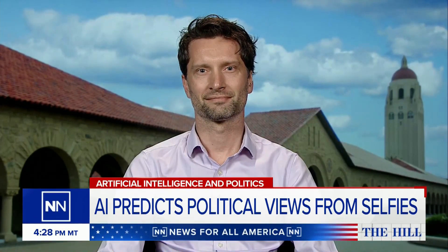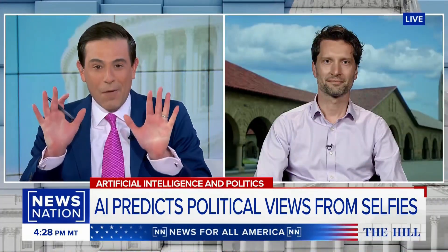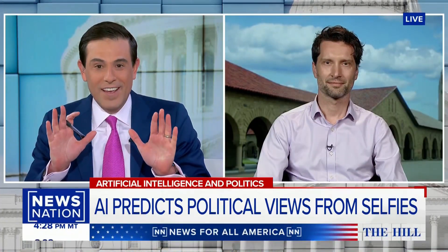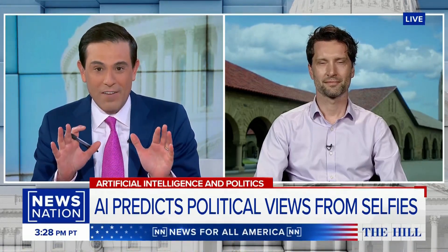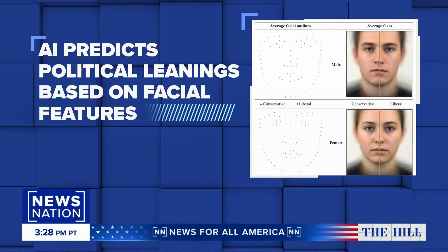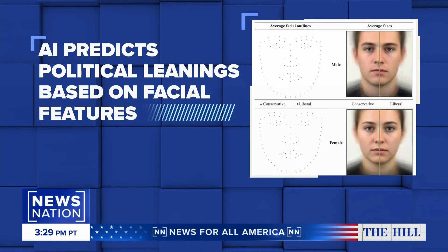Dr. Kaczynski, thanks for being with us here on The Hill. So I want to start off by showing the images. On the left is conservative and on the right is liberal, and they're super close. AI is able to tell by the tiniest margins. Explain how this is possible.